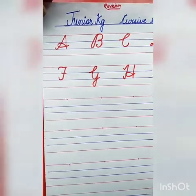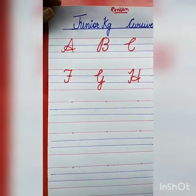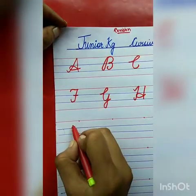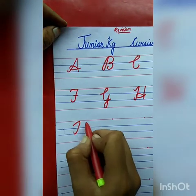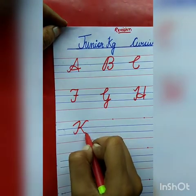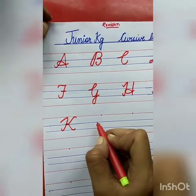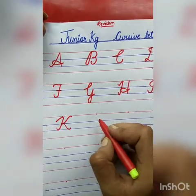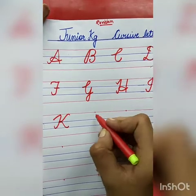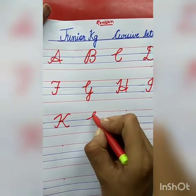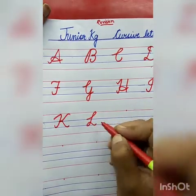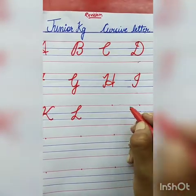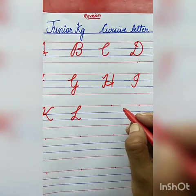Now tell me the next letter. K — very good! K for kite. The spelling of kite: K-I-T-E, kite. Now the next letter is L for lion. The spelling of lion is L-I-O-N, lion.